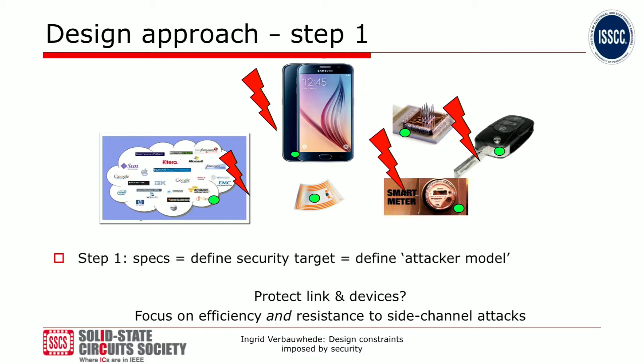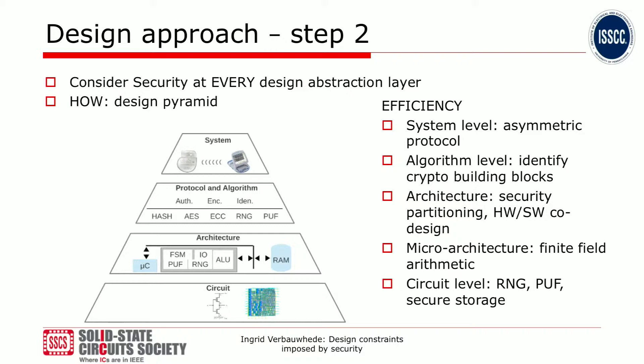So how do we start protecting these devices? That's what we call design approach step two. We have to consider security at every design abstraction layer — we call that the design pyramid. If you want to focus on efficiency only, we still do it at every design abstraction layer. We start at the system level, where we might choose asymmetric protocols that put the burden of calculations on the server, so the small device doesn't need many calculations — like a pacemaker talking to a programmer.